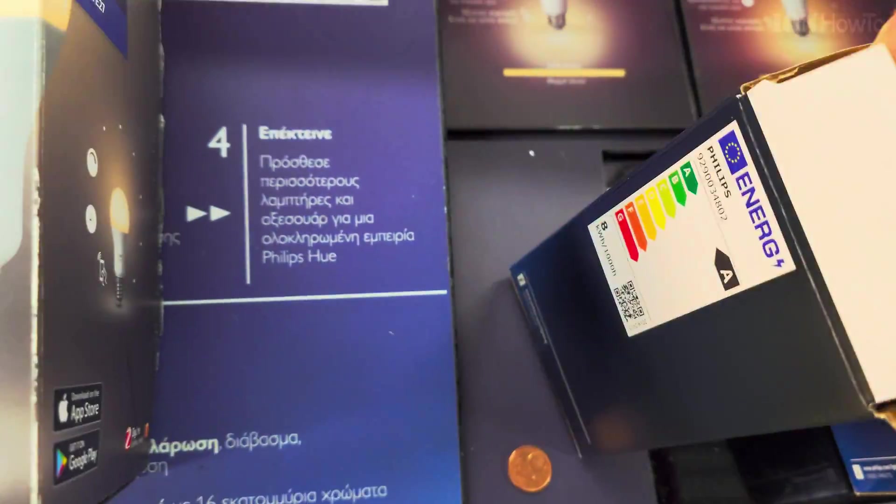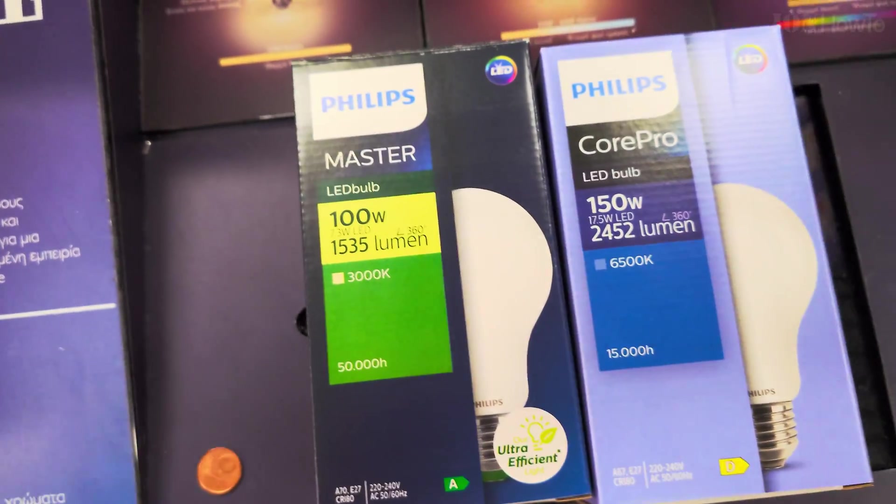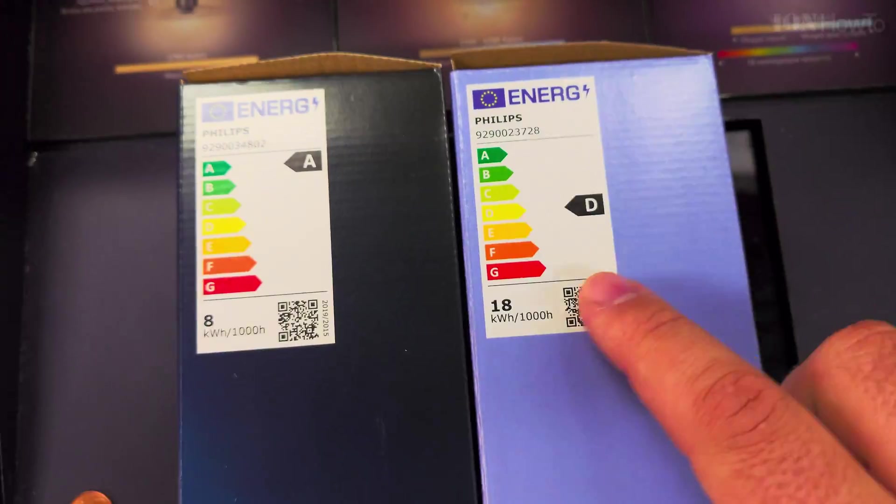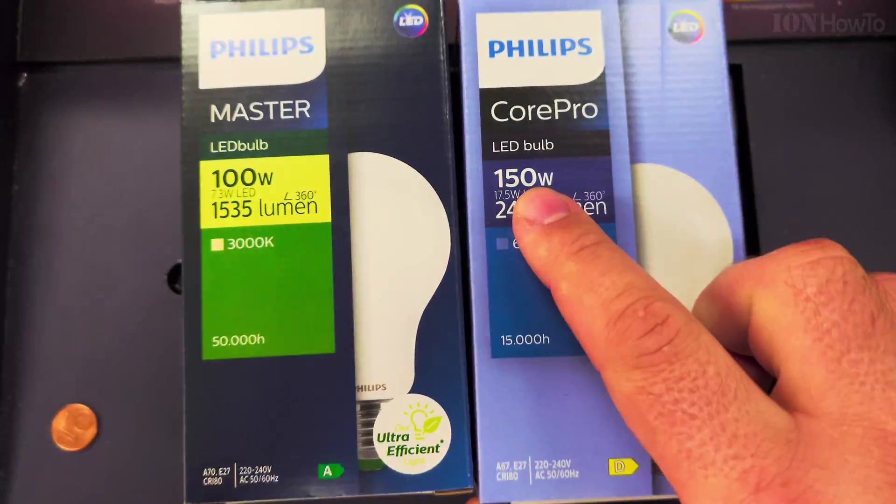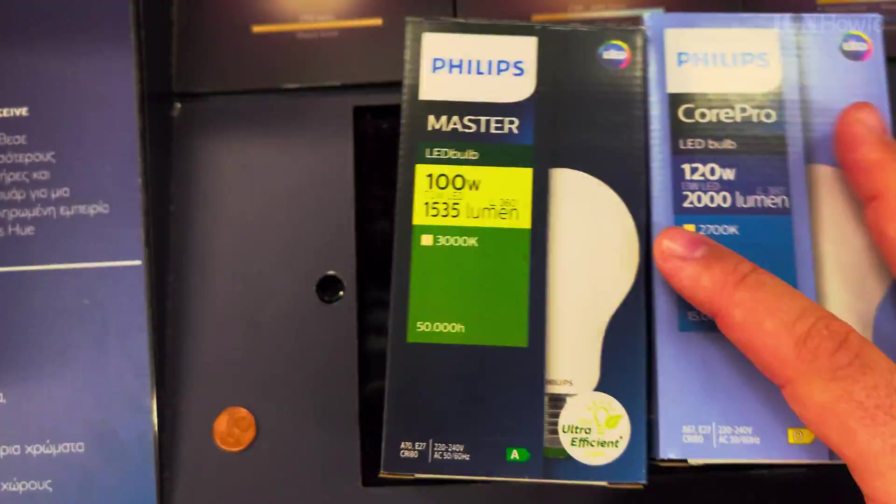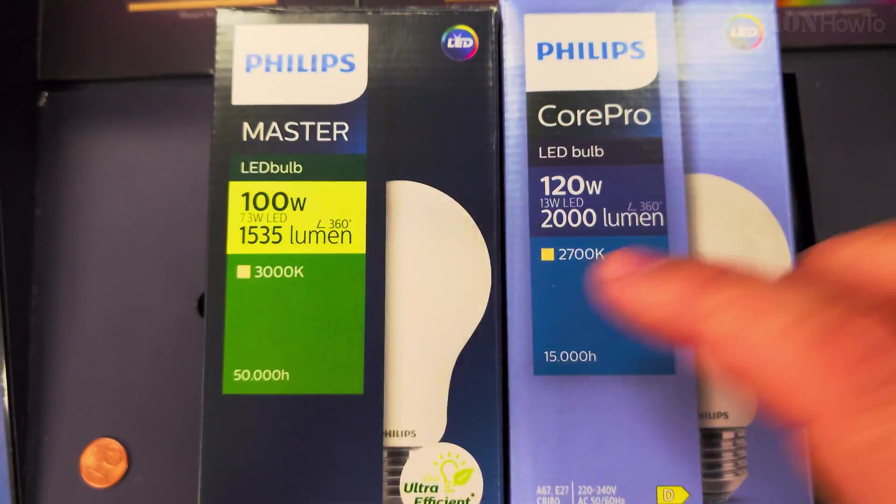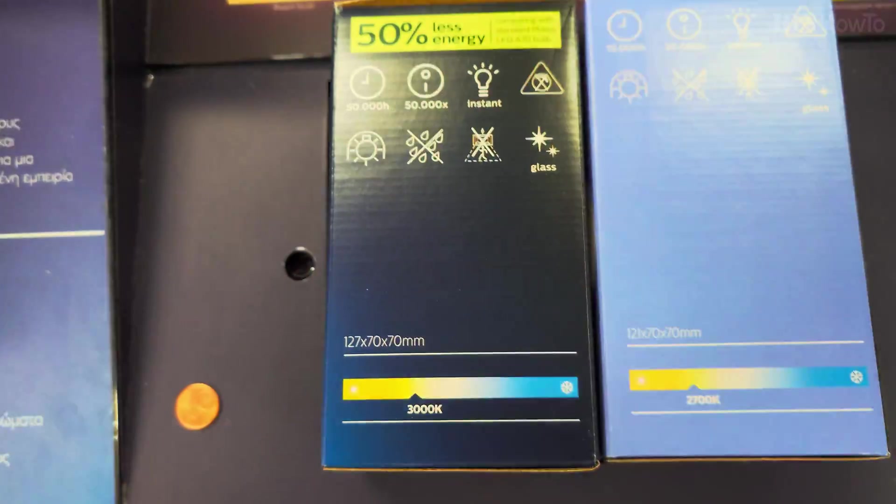The Master has amazing efficiency - it's 7.5 watts for 1535 lumens, that's really good. The Core Pro has less efficiency, it's in class D, and this one is cool white.